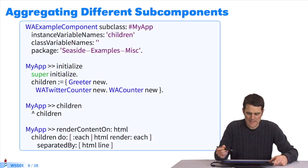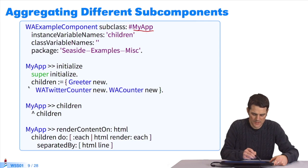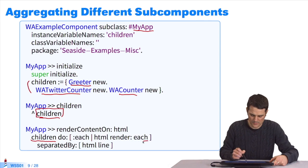We can also aggregate different subcomponents, they don't have to be the same type. Before, I only combined counters, and here we're going to have an application, a MyAppComponent. In the method initialize, it's a collection, except that in this collection, I put the app greeter that we used in a previous sequence, a Twitter counter, and a counter. Three components. My method children renders all the children, the subcomponents of this MyAppComponent, and in renderContentOn, I want to browse my children and ask them to render themselves. So we do HTML render each, and I'll do HTML render of greeter, the Twitter counter, and counter.